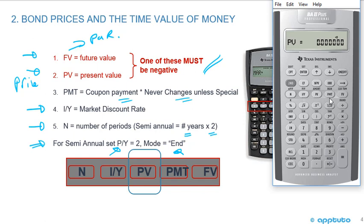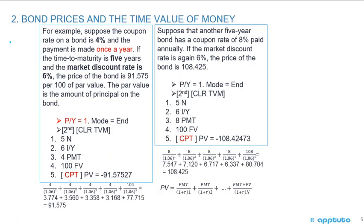Be careful: if it's semi-annual, you must enter the semi-annual payment, and the future value is the par value. Now let's do two examples calculating price. In this first one, coupon payments are annual, not semi-annual. Suppose the coupon rate on a bond is 4%, payment is made once a year, time to maturity is five years, and the market discount rate is 6%.